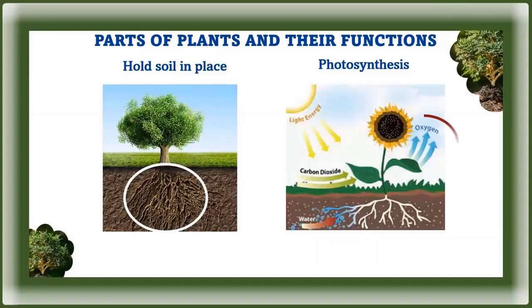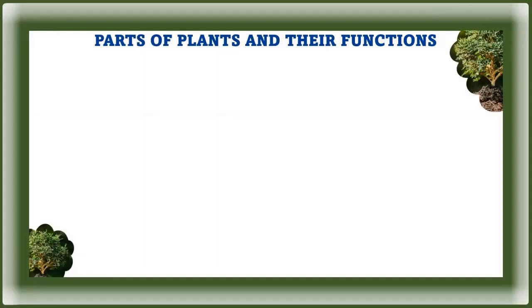When plants carry out photosynthesis, they take in carbon dioxide from the atmosphere and release oxygen for us to breathe. Now let us see a summary of what we're going to see in today's video.